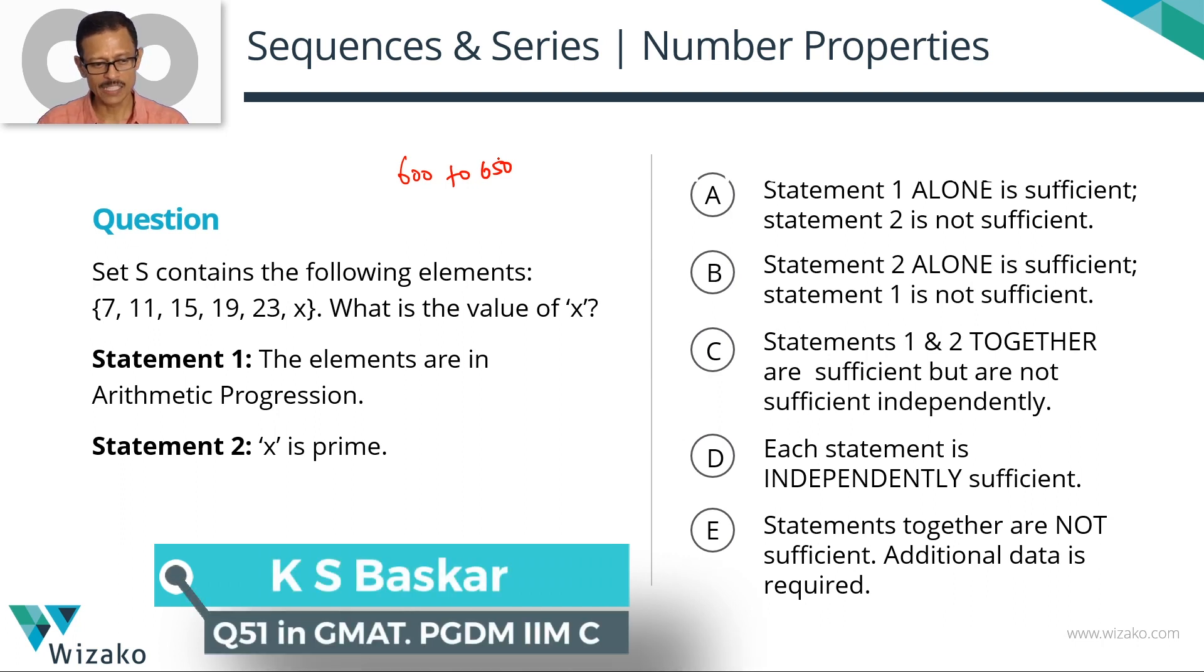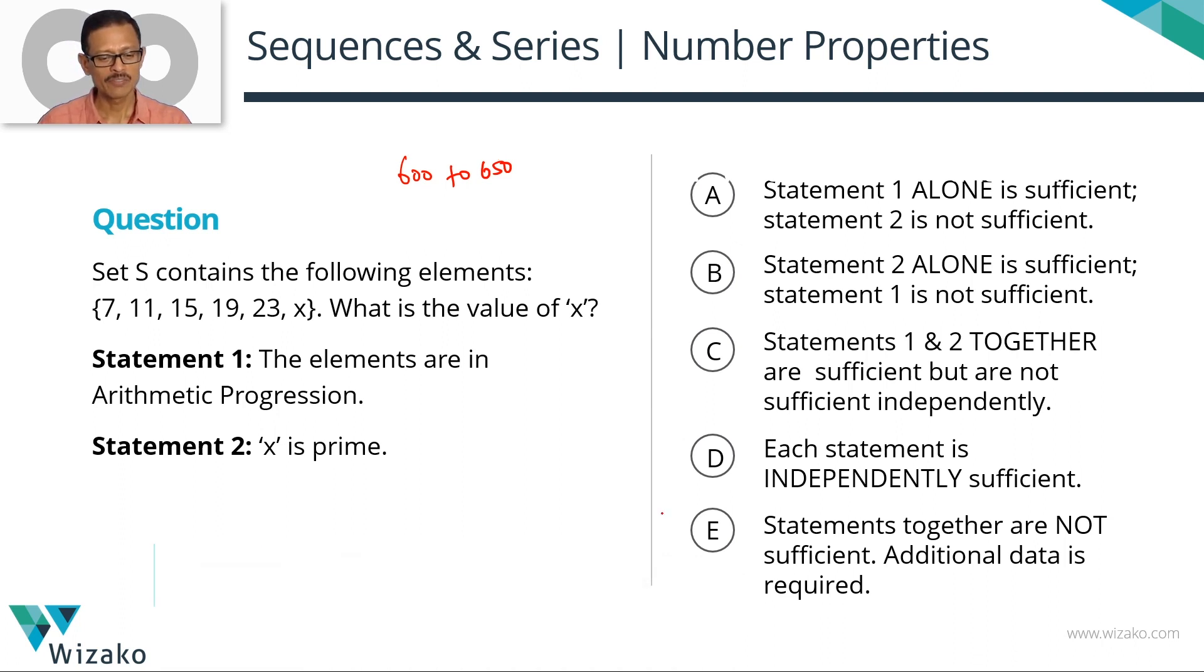Set S contains the following elements: 7, 11, 15, 19, 23, and it includes an x. The question is what is the value of x? We have some information in these two statements, statement 1 and statement 2. We need to figure out using the information in these two statements, will we get a value? Will you get an answer to this question?